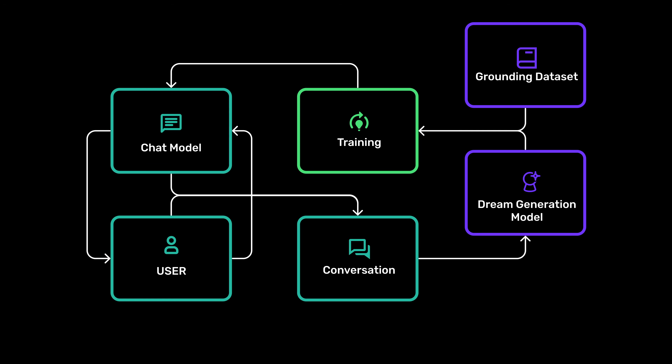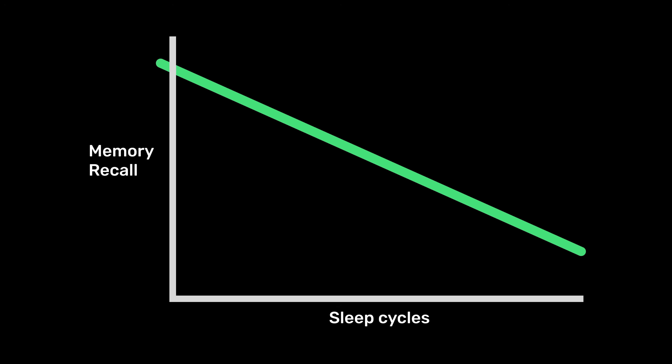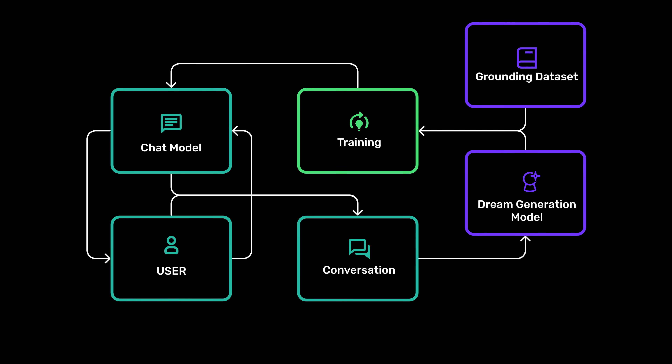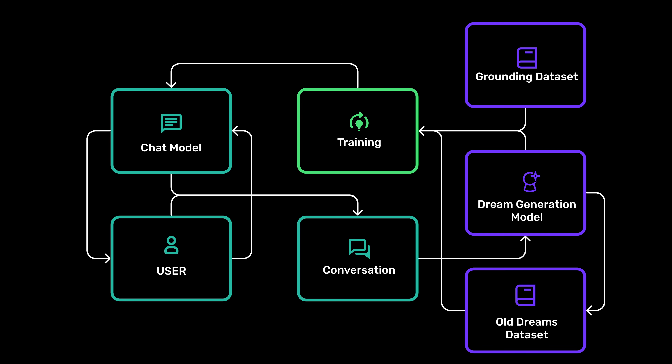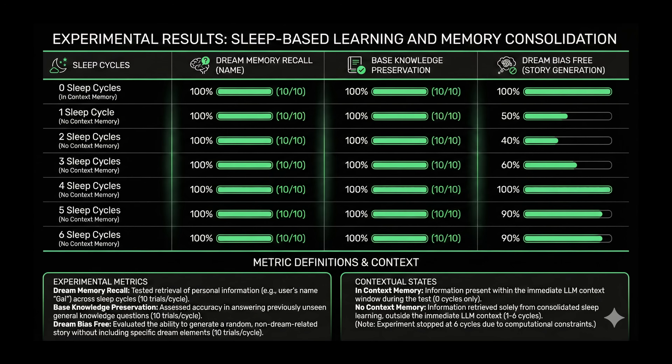But we're still not finished — there is still one major problem. If we just sleep once, the current system works fine. But we want a model that can sleep a thousand times and still remember information from the first conversation. With the current system, the more times we sleep, the higher the chance it gets earlier information wrong. The solution is simple: if we store all the dreams generated so far and every time we sleep sprinkle in a few random previously-dreamed dreams, we can almost completely eliminate this problem. After fully implementing this, we have zero memory loss after six sleep cycles and zero knowledge base degradation.